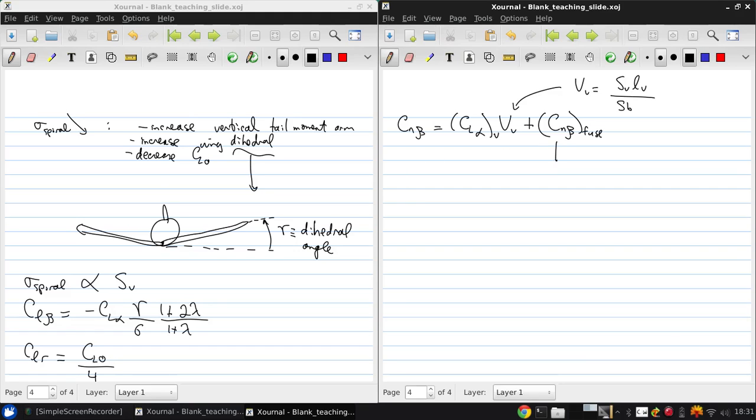Now here, CN-beta from the fuselage is given by minus 2 times the fuselage volume over S times B. So CNR is minus 2 CL-alpha of the vertical tail times the vertical tail volume coefficient times LV over B.